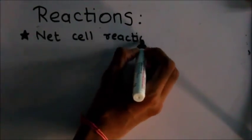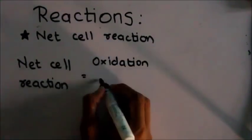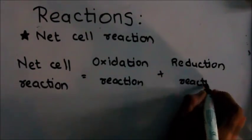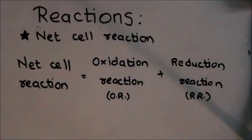So to get the net cell reaction, what we do is we add the oxidation reaction and the reduction reaction, and this gives us the net cell reaction for the dry cell.